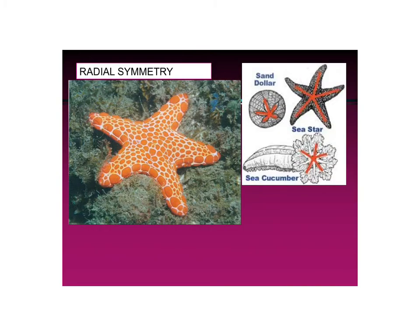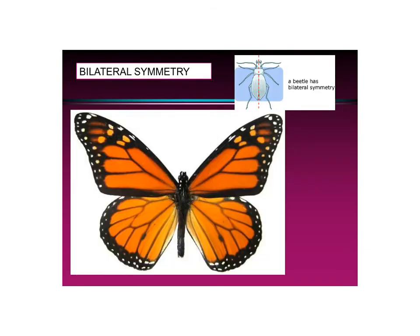Then we have an example of radial symmetry: a starfish. You can see that in most directions there's symmetry — you can divide it and get symmetrical halves. Sea cucumber, starfish, and sand dollar all have that. And you can see bilateral symmetry in things like insects. You could divide up this butterfly into left and right sides — that's how you know it's bilaterally symmetric.